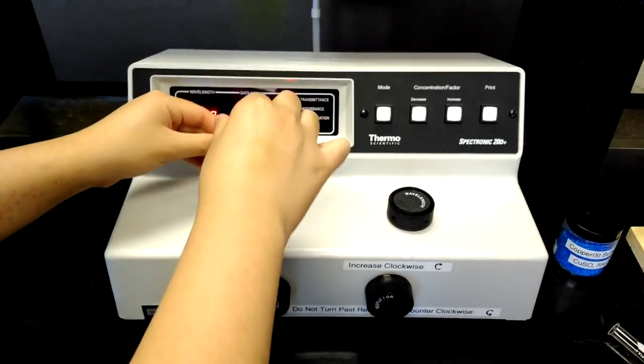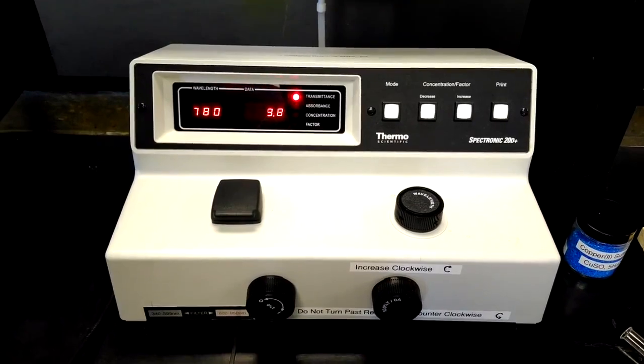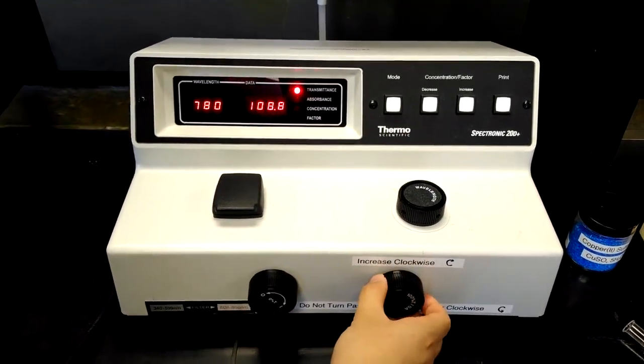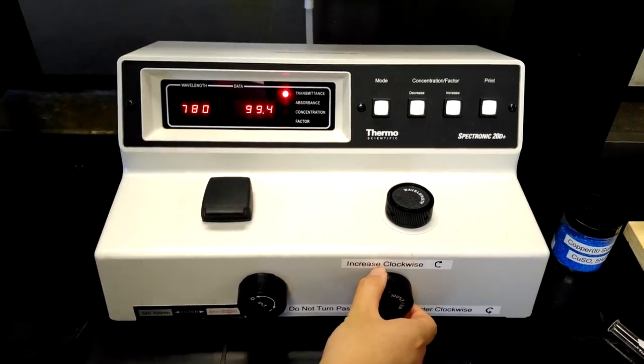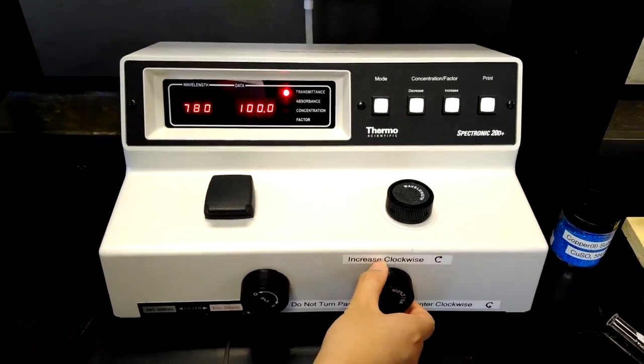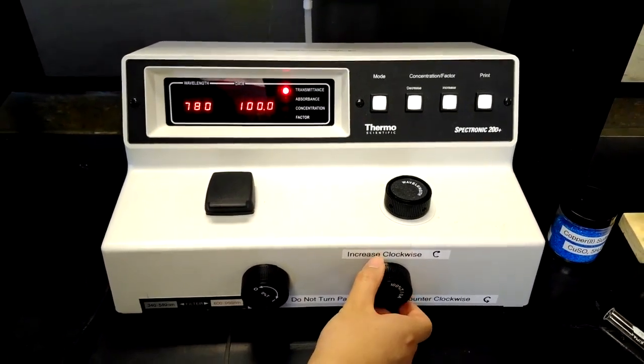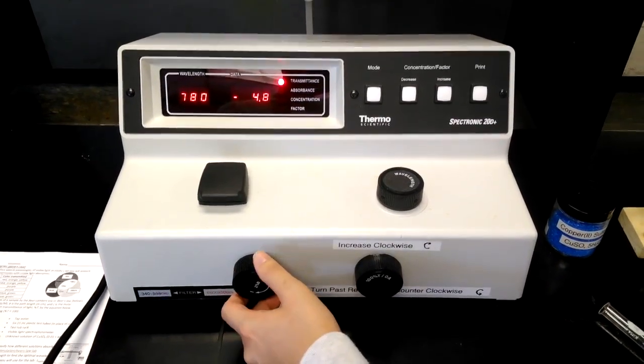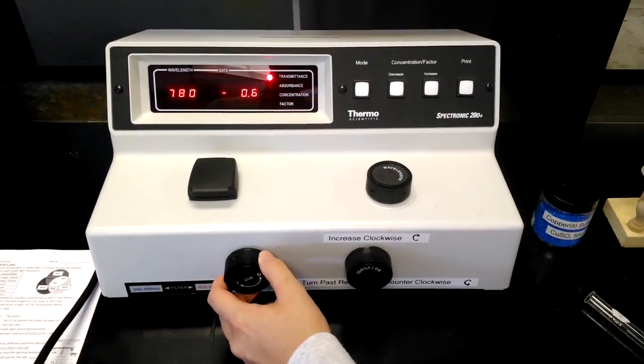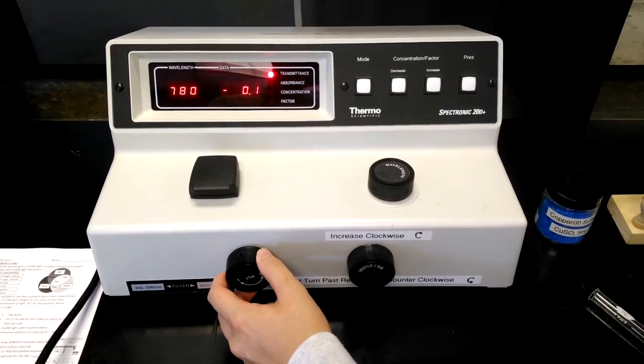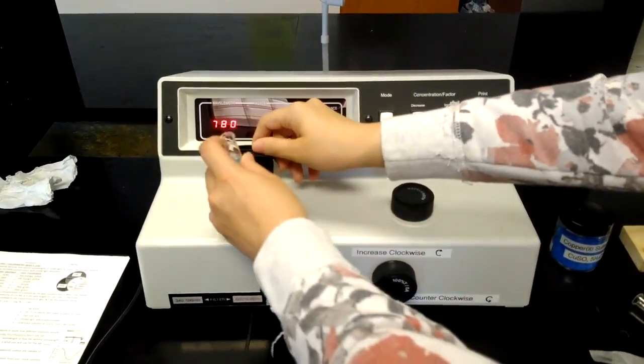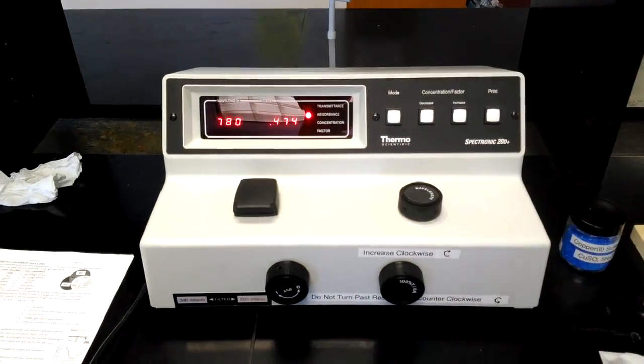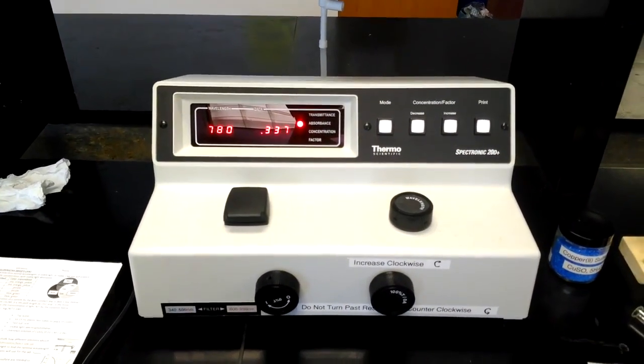Remember to clean the test tube with a kim wipe before putting it into the spectrophotometer. With a blank sample, set the transmittance to 100. In an empty sample compartment, set the transmittance to 0. Change the mode from transmittance to absorbance. Use the spectrophotometer to measure the absorbance of the solution.